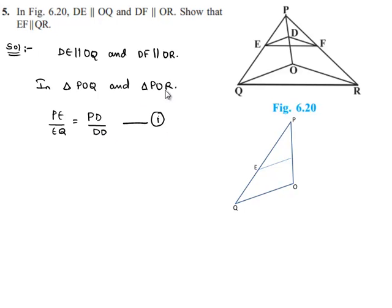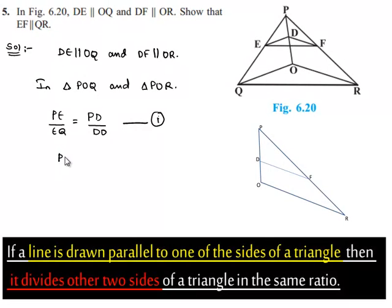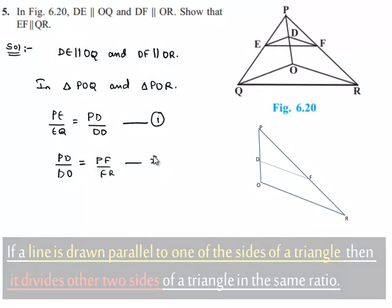Now, in triangle POR, DF is parallel to OR. So by the Basic Proportionality Theorem, we can write PD by DO is equal to PF by FR. Let this be equation number 2.